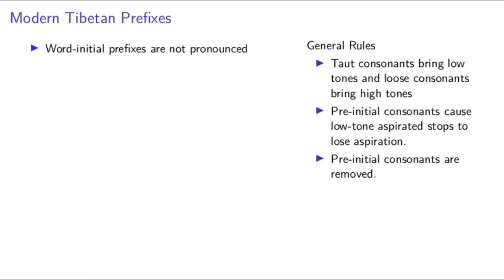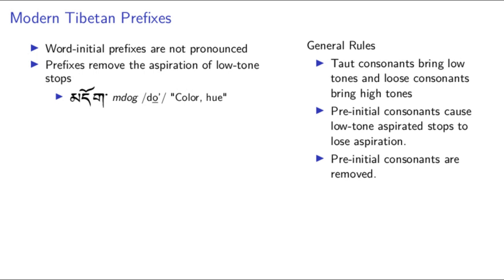Here we're going to see that word-initial clusters simplify in exchange for tones, which I've already alluded to. I'll also repeat a general rule about tones: taut consonants bring high tones and loose consonants bring low tones. In modern Tibetan, word-initial clusters are simplified such that pre-initial consonants, including prefixes, are not actually pronounced at the start of a word. But they do affect the aspiration of the following initial consonant. If the following consonant is a low tone aspirated stop, it will lose its aspiration.